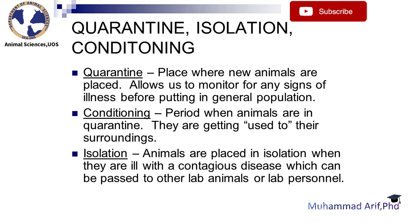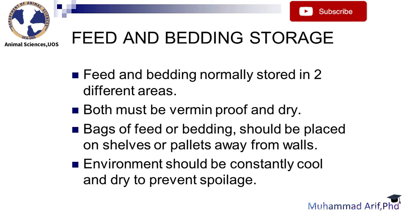Quarantine is the place where new animals are placed, allowing staff to monitor for any signs of illness before putting them into the general population. Conditioning is the period when animals are in quarantine and are getting used to their surroundings. Isolation is when animals are placed in a separate area because they are ill with a contagious disease that can be passed to other lab animals or lab personnel.